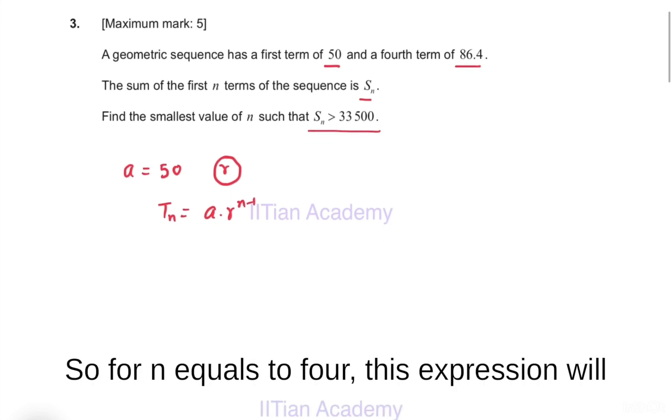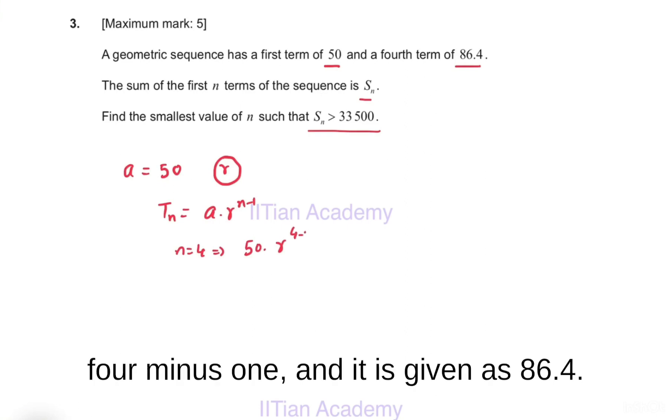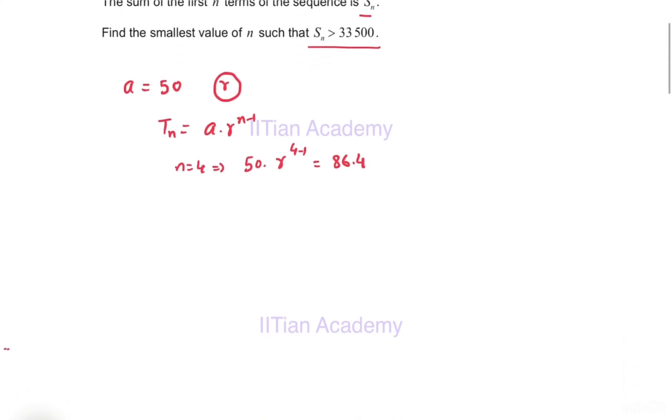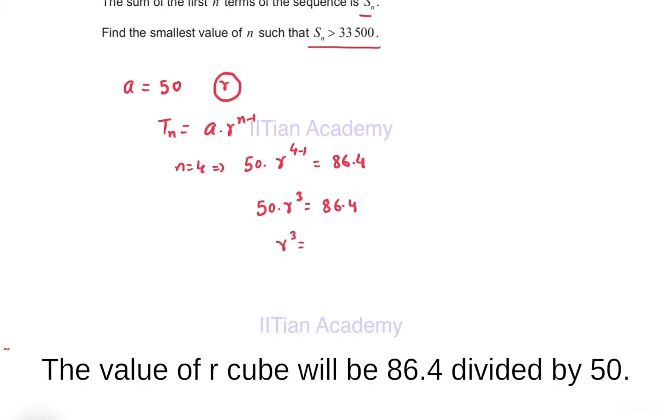For n equals to 4, this expression will be 50 multiplied by r raised to the power 4 minus 1, and it is given as 86.4. You can solve this for r: 50 r cube equals to 86.4. The value of r cube will be 86.4 divided by 50.